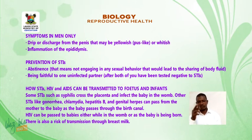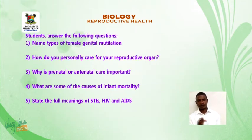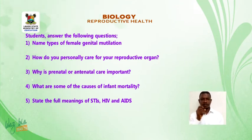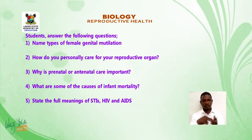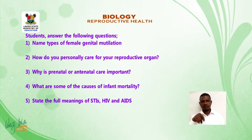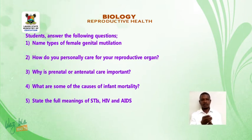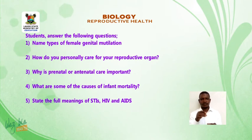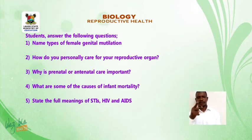Students, answer the following questions: Name the types of female genital mutilation. How do you personally care for your reproductive organs? Why is prenatal or antenatal care important? What are some of the causes of infant mortality? State the full meanings of STIs, HIV, and AIDS. Goodbye, students.